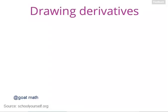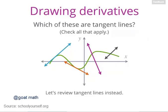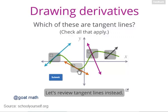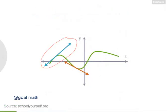It's time to learn what derivatives are and how to draw them. But first, let's make sure you remember what tangent lines are. Which of these four lines here are tangent lines? If you'd like to review tangent lines instead, then just click down here. This line here is tangent to the curve at this point over here, and this line is tangent at this point.